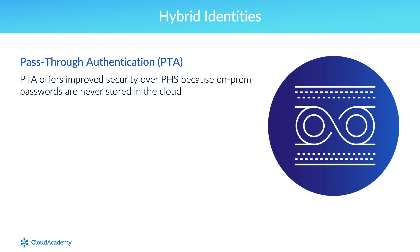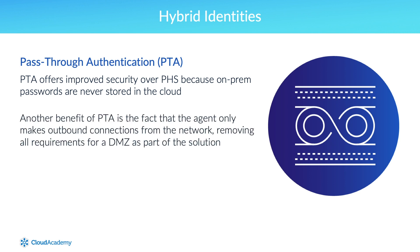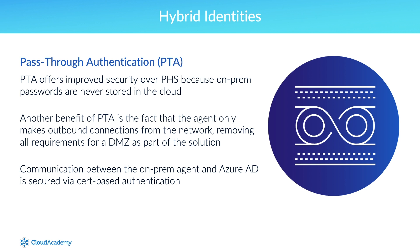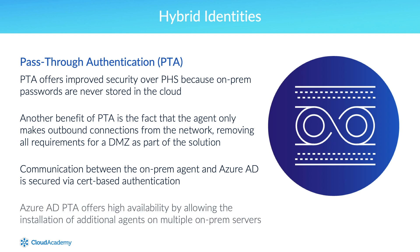Pass-through authentication offers improved security over password hash synchronization because on-prem passwords are never stored in the cloud. Because it works with Azure AD conditional access policies, including MFA, pass-through authentication offers additional account protection. Another benefit is that the agent only makes outbound connections from the network, removing all requirements for a DMZ. Communication between the on-prem agent and Azure AD is secured via certificate-based authentication, and certificates are automatically renewed every few months by Azure AD. Azure AD pass-through authentication also offers high availability by allowing the installation of additional agents on multiple on-prem servers.